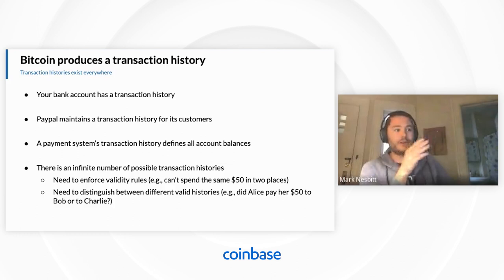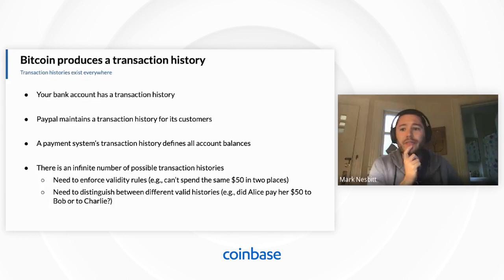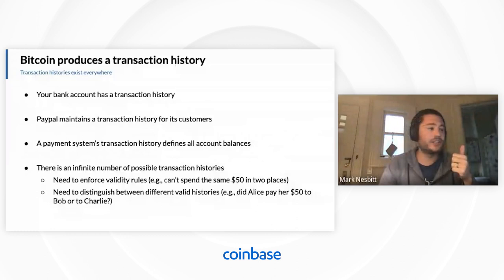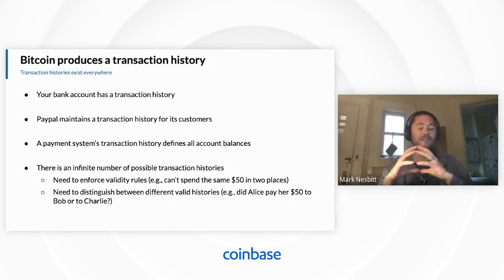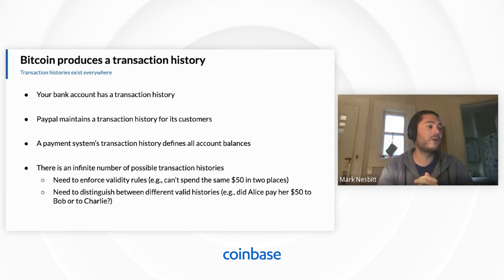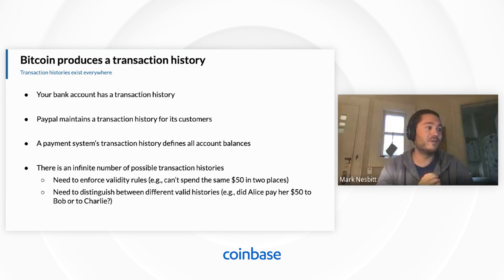Here's an interesting point worth realizing: there is an infinite number of possible transaction histories within any system that's tracking transactions. There's the validity of a transaction history — you have to enforce certain validity rules. If you imagine invalid transaction histories where the same $50 was spent in two places, that would be invalid. Within the set of valid transaction histories, there are also an infinite number where any type of transactions could have happened. One might have Alice paying $50 to Bob, another might have it paying to Charlie. Which transaction history we consider as true is obviously very important to both Bob and Charlie.